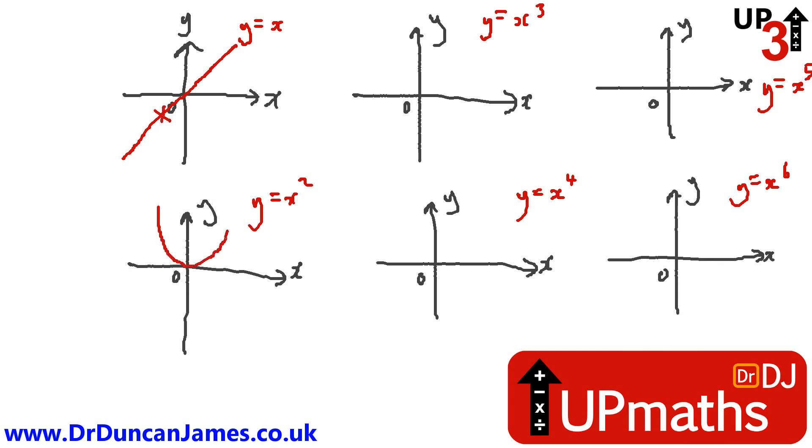What about y equals x squared? A lot of people are familiar with this one. If x is 0, y is 0, so it definitely passes through the origin. What if x is minus 1? Well, minus 1 squared, oh, that makes plus 1. Okay, so that explains why it passes through that point there.